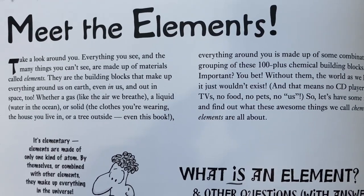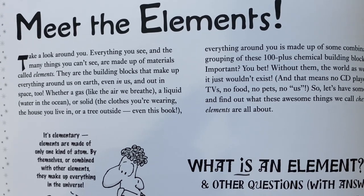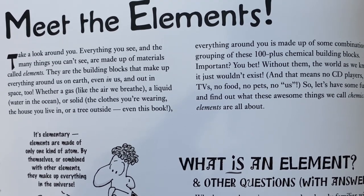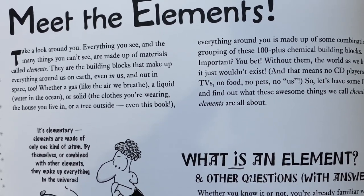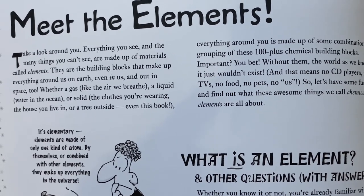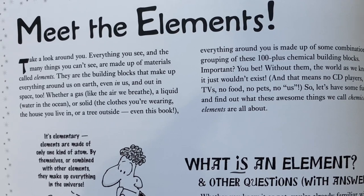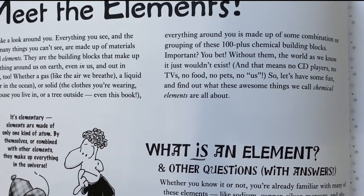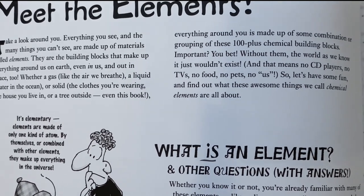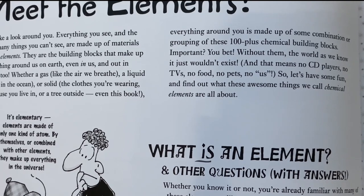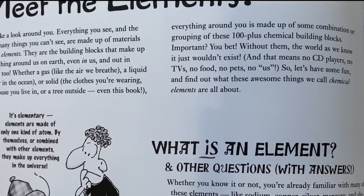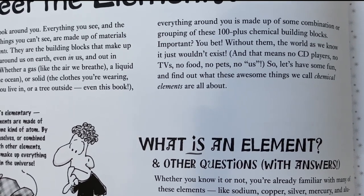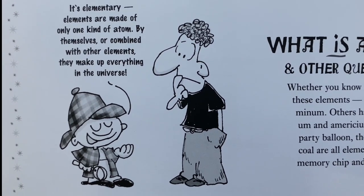Take a look around you — everything you see, and the many things you can't see, are made up of materials called elements. They are the building blocks that make up everything around us on earth, even in us, and out in space too. Whether a gas, a liquid, or solid, everything around you is made up of some combination or grouping of these 100-plus chemical building blocks. Elements are made of only one kind of atom.